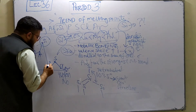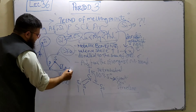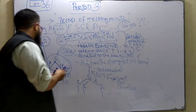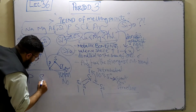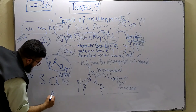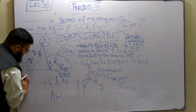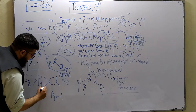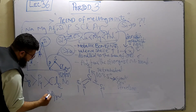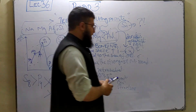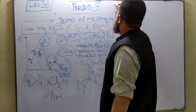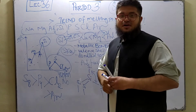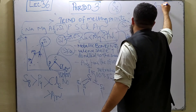Then we have phosphorus, sulfur, chlorine, and argon — these four elements have separate questions. Sulfur has the highest melting point, followed by phosphorus, then chlorine, and finally argon. The reason sulfur has the highest melting point is that sulfur naturally exists in the form of an S8 molecule — as an octamer — with eight sulfur atoms bonded to one another.